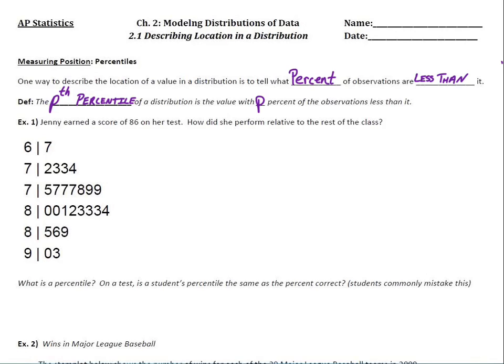Let's look at the first example. It says, Jenny earned a score of 86 on her test. How did she perform relative to the rest of the class? And here's the distribution of test scores for the entire class. And Jenny, she got the 86. Okay, so since we're already good at reading these stem and leaf plots, if she's the 86, the 80s are here, that's her right there. So she's at that 6 right there. Let's put a little circle around it.